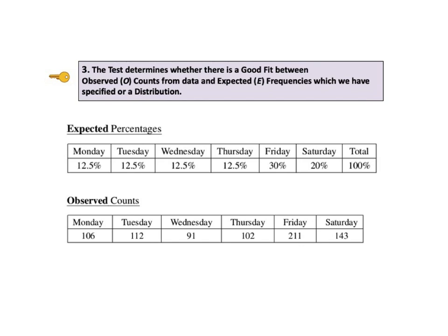Since we will be doing a hypothesis test on the validity of the model represented by these percentages, we start with two things: we state a null hypothesis — more on that later — and we select a value for alpha, most commonly 5%, which gives us a 95% level of confidence in the test. We then open the tavern and count customers for six days, observing the counts shown in the second table. Observed counts are actual numbers from the sample data.